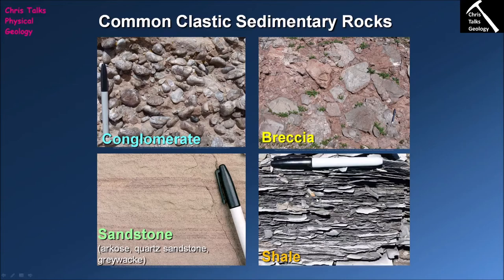The final type of common clastic sedimentary rock we're going to talk about is shale. A shale is a type of sedimentary rock that consists of greater than two-thirds clay. The two smallest clast sizes are silt and clay. A sedimentary rock dominated mostly by silt is a siltstone. A rock containing both silt and clay in approximately equal amounts is classified as a mudstone. A sedimentary rock dominated by greater than two-thirds clay-sized particles is a shale.